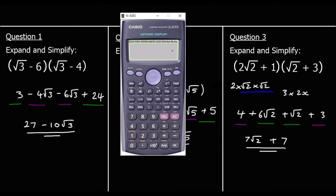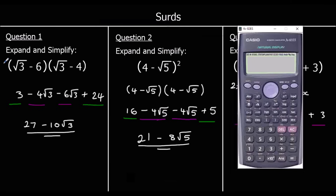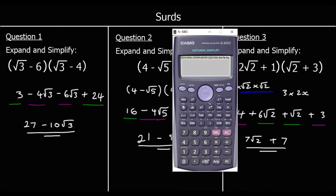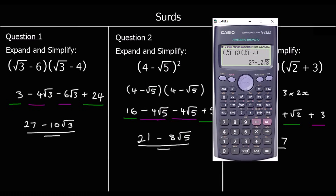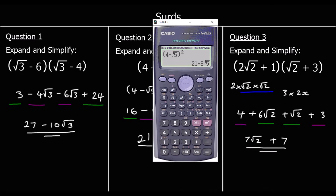One more thing: if we grab a calculator — because these expressions are just numbers, we could type these in the calculator. For question 1, type in exactly how it looks: root 3 minus 6 times root 3 minus 4, and the calculator will expand and simplify for us. The same for question 2: 4 minus root 5 squared. If you've got a calculator when you're asked to do this, you can just type it in and the calculator will tell you the answer.